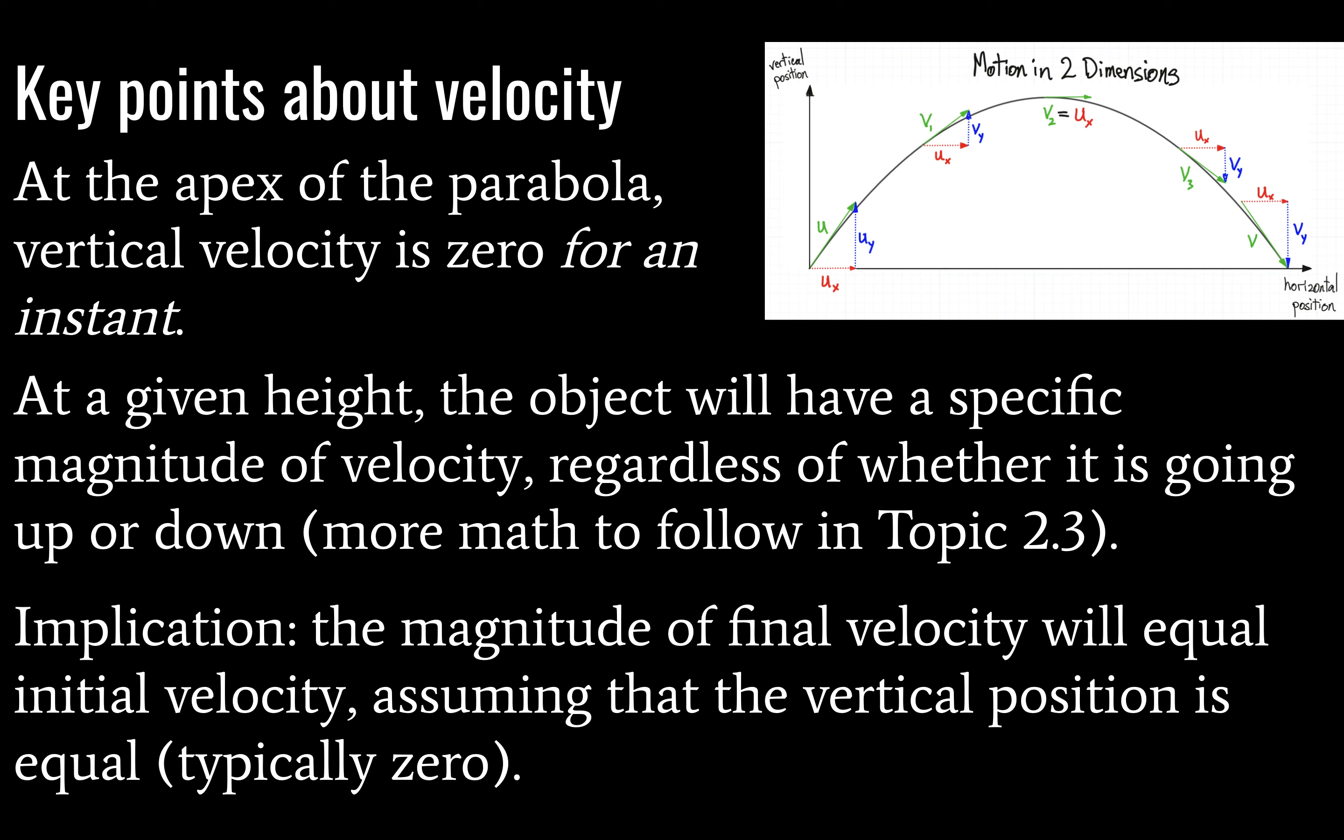The implication of this fact is that the magnitude of final velocity is going to be equal to the magnitude of the initial velocity. And that does assume that the vertical position is equivalent, and normally this would be zero. You would imagine, though, that this is not the case if we are launching our projectile off of a cliff. And that's a pretty common scenario in IB physics. So this is only the case when you're on a flat field or something.